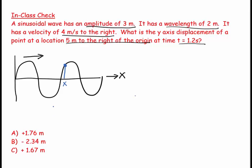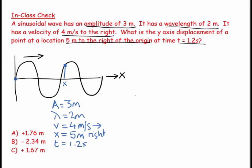Then we turn around and say okay let's make a list of what we know and we know that our amplitude is equal to 3 meters and we know that our wavelength is equal to 2 meters and we know that our velocity, that's the velocity of the crests moving to the right, is 4 meters per second to the right. And we know that the value of x, the point that we're interested in, is actually 5 meters to the right of the origin, and we know that time, the instant we're interested in, is 1.2 seconds.